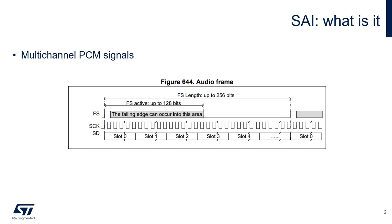Like the I2S, the serial audio interface is a peripheral that is also used to transmit and receive digital audio data. The TDM protocol implemented can be seen as an extension of the I2S, which allows handling multiple channels. Its flexibility makes it possible to interface with basically all the audio devices and formats.